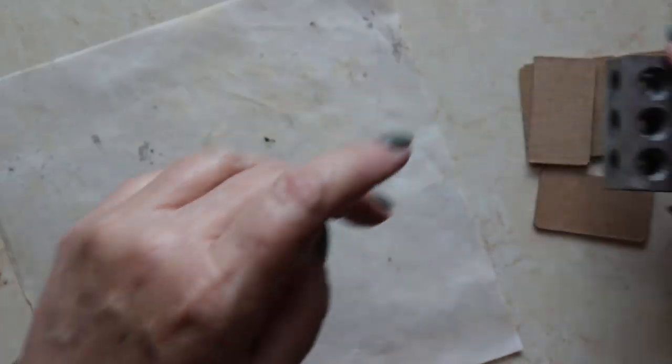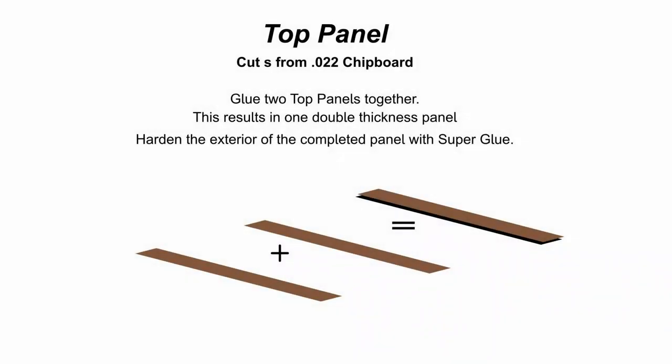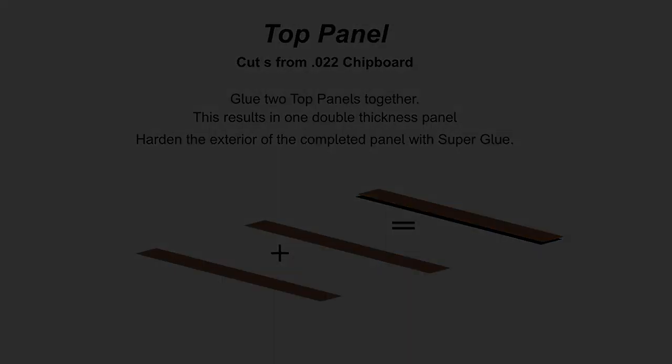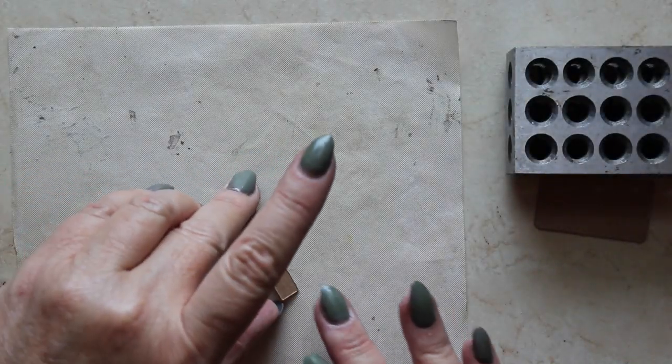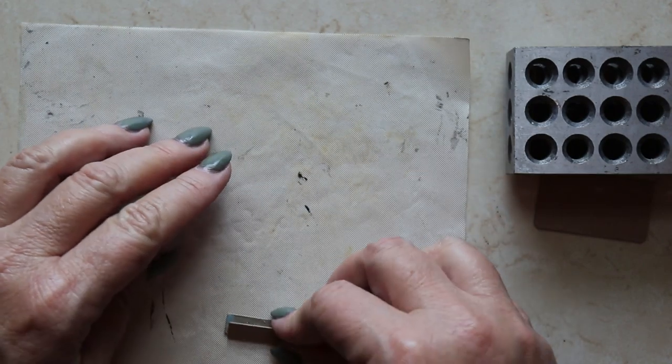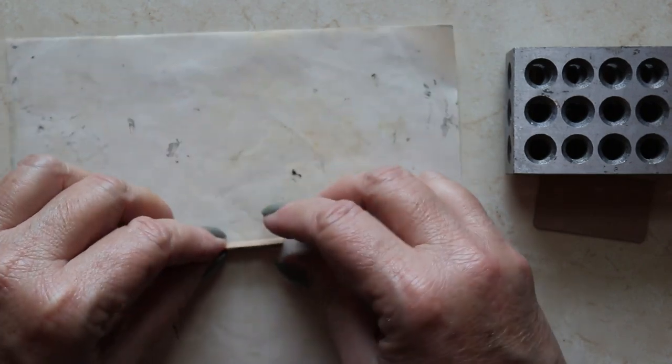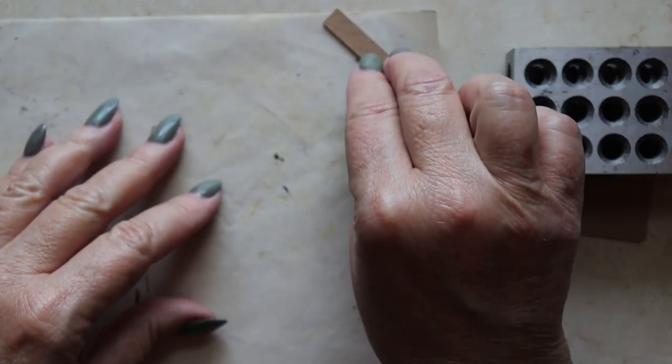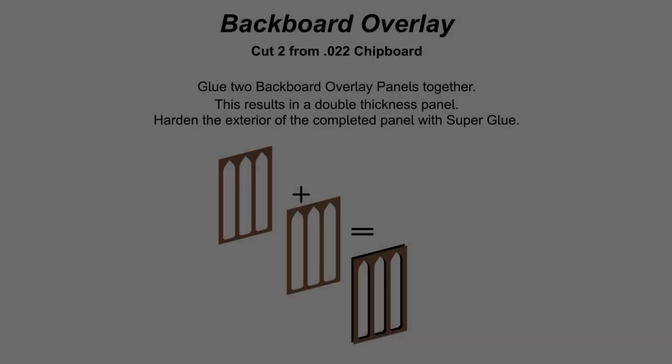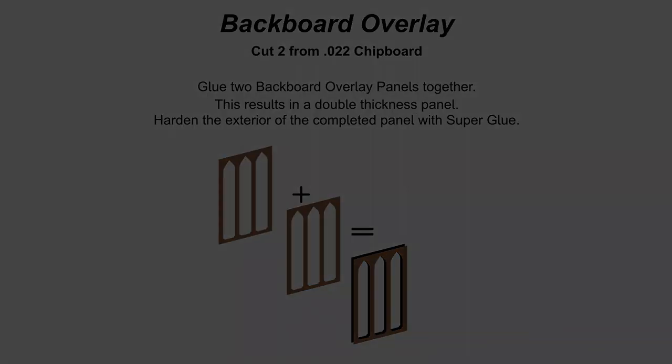As each component is glued together, I'm placing them under a one-two-three block. Next, it's time for the top panel. That's these two little rectangles, and yep, they get glued together with Zig two-way.